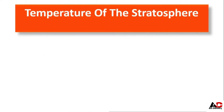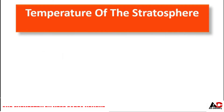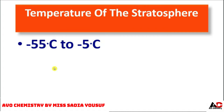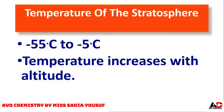Temperature of the stratosphere. The temperature ranges from minus 55 degrees Celsius to minus 5 degrees Celsius. Temperature starts from minus 55 degrees Celsius and ends at minus 5 degrees Celsius at the stratopause — the boundary where the stratosphere ends and mesosphere starts. This shows that temperature increases with altitude.